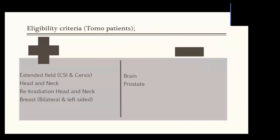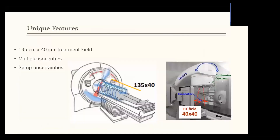Before looking at clinical examples, I'd like to share our eligibility criteria. We are trying to make this machine as specialized as possible — treating all extended fields such as head and neck irradiation, since these cases require additional attention to organ-at-risk constraints and bilateral cases that can be difficult to manage with conventional linacs. Almost all of our CSI patients are now treated with tomotherapy, because you can treat up to 135 cm, avoiding multiple isocenters and junction uncertainties.